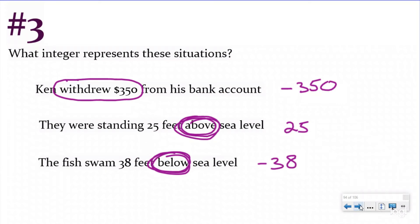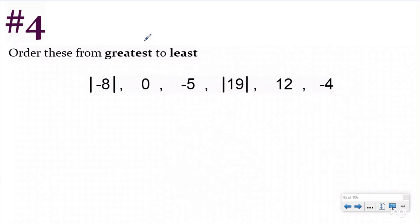Let's do our last problem, our most challenging one, number four. So here it says, order these from greatest to least. Now, number four is always our most challenging question, because you're going to have to combine a couple different lessons into one to really check your understanding. So here we have numbers with absolute value and then just normal integers. So what we want to do first is we want to convert our absolute value, because we don't want to know the value of negative eight. We want to know the absolute value of negative eight. So the absolute value of negative eight is going to be eight. And then my absolute value of 19 is just 19.